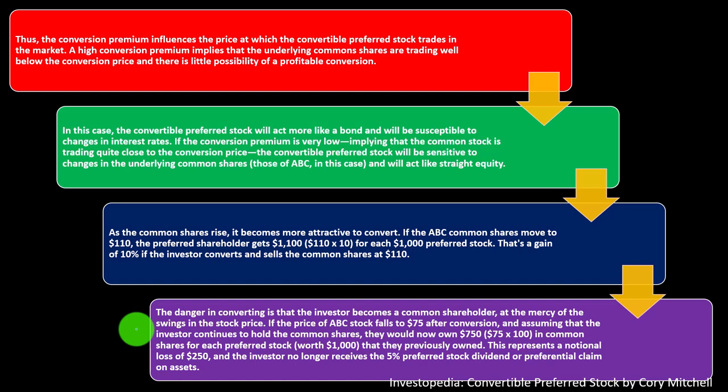Once converted, you can no longer revert back to the preferred stock's bond-like protection. If the price of ABC stock falls to $75 after conversion and the investor continues to hold the common shares, they would now own $750 (75 × 10) in common shares for each preferred stock worth $1,000 that they previously owned. This represents a notional loss of $250, and the investor no longer receives the 5% preferred stock dividend or the preferential claim on assets.